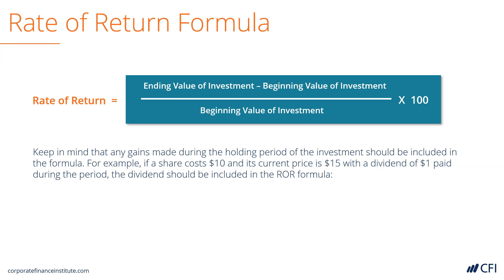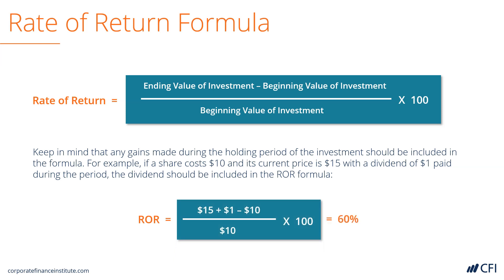For example, if you bought a share at $10 and its current price is $15 and you received a dividend of $1, the dividend should be included in the formula. That would mean the rate of return equals 15 plus 1 minus 10, all divided by $10, times 100 — equaling a rate of return of 60%.